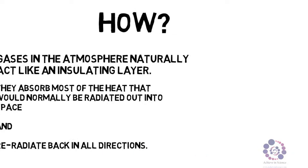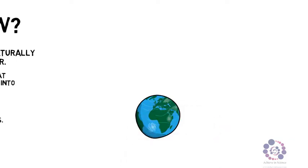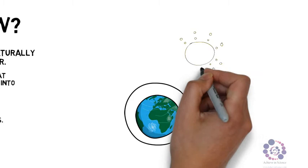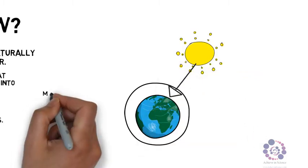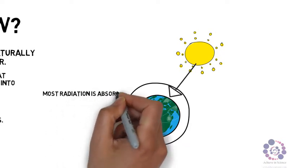Let's now have a look at this via a diagram and in a bit more detail. So if we take planet earth, we have got the atmosphere around it and we have got the sun shining upon us. Most radiation is absorbed by the earth's surface and warms it up.